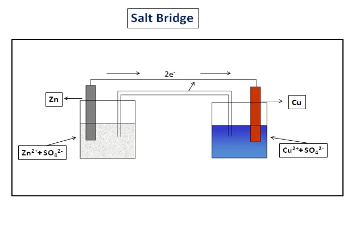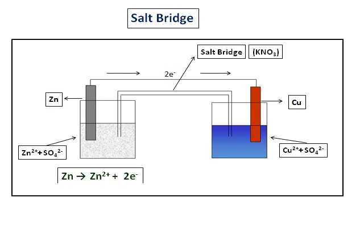So let's understand why this salt bridge is there and what is the purpose of it in an electrochemical cell. Salt bridges are usually made of soluble salts. We can use potassium nitrate, potassium chloride, sodium nitrate, and sodium chloride. So the purpose of the salt bridge is, consider the left-hand side, the zinc electrode and zinc sulfate. The reaction that takes place there is zinc giving you zinc ions and two electrons.